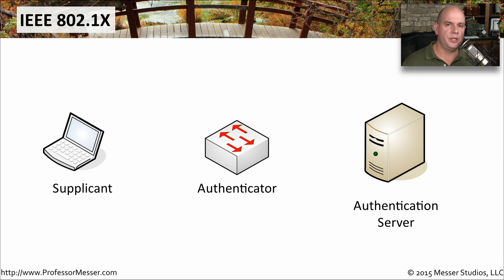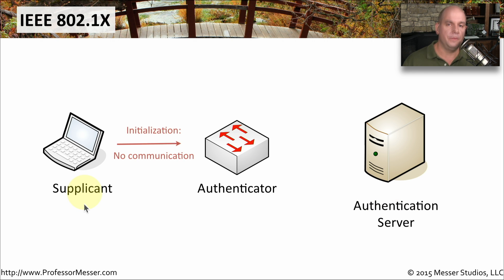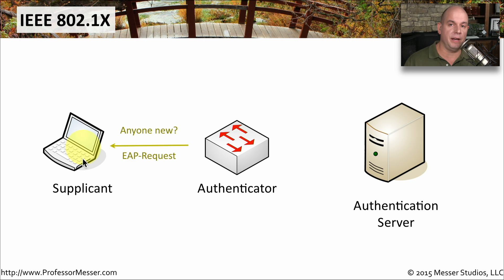For this 802.1x conversation, three devices will be participating. The first is the device connecting to the network that needs access — this is called the supplicant. In the middle is an authenticator, generally software running inside your switches. On the back end is a separate server called the authentication server. In the first step, the supplicant connects to the network and finds there's no access to anything. 802.1x prevents anybody new from gaining access to the network. It's the authenticator's job to constantly send EAP request messages asking if anybody is new, giving them a chance to respond.